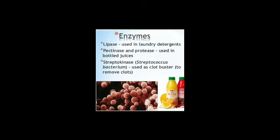The bacterium Streptococcus is used in the production of streptokinase. After that, it is genetically engineered and used as a clot buster — meaning it removes clots from the blood vessels of patients due to myocardial infarction, which may lead to heart attack. So indirectly, all these enzymes produced with the help of microbes are helpful for humans.